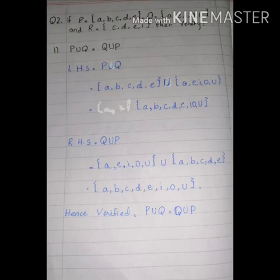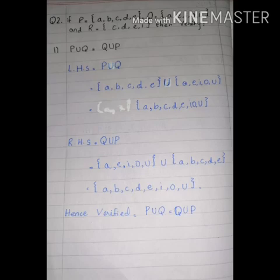We have to verify the parts given. When we verify, it means that we have to show the left-hand side equals the right-hand side — we have to equate the two sides. So first of all, we have set values P, Q, and R. We have to express them in the form of union and intersection. We will do part number 1.